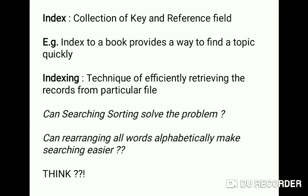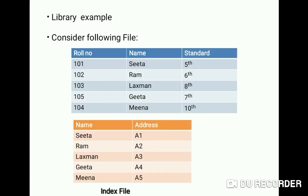If all words in any book were alphabetically arranged, it would have no meaning and would also be time-consuming, so it is not appropriate. Basically, indexing is a technique of efficiently retrieving records from any particular file. For example, consider a huge central library in your college — if you want to locate a particular book, you can form an index.